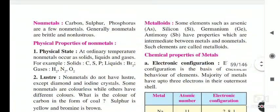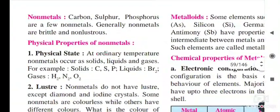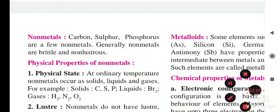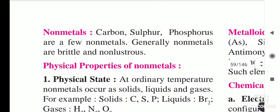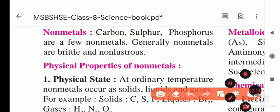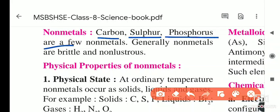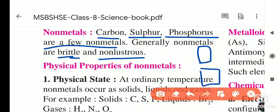Now we will see the properties of non-metals. Generally, non-metal properties are opposite to metal properties. Examples of non-metals are carbon, sulfur, and phosphorus. Non-metals are brittle and non-lustrous. Brittle means they break very easily — for example, if you apply pressure to chalk it breaks into two pieces.